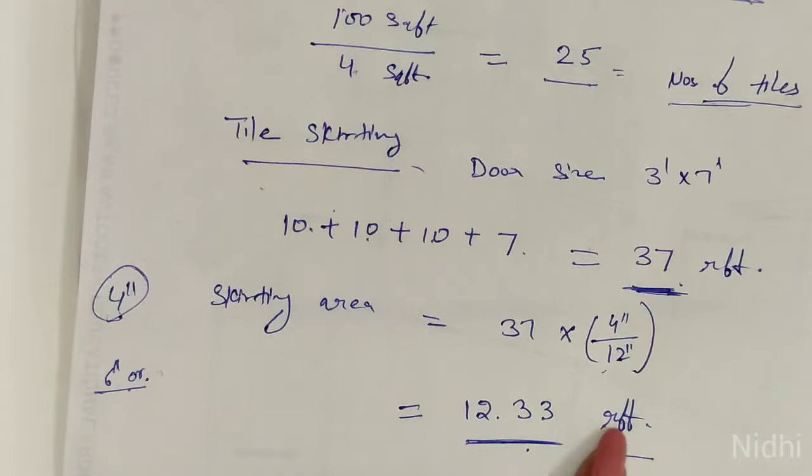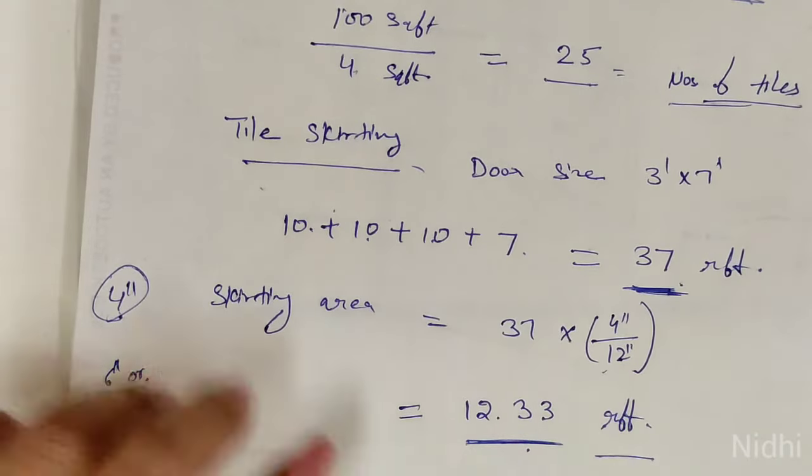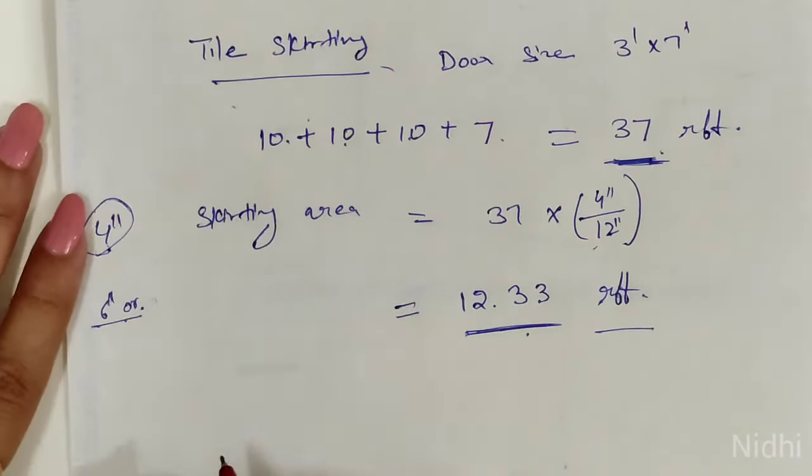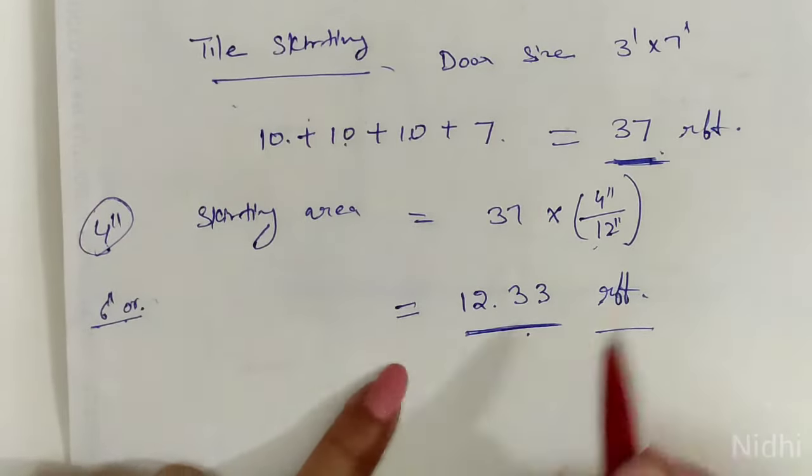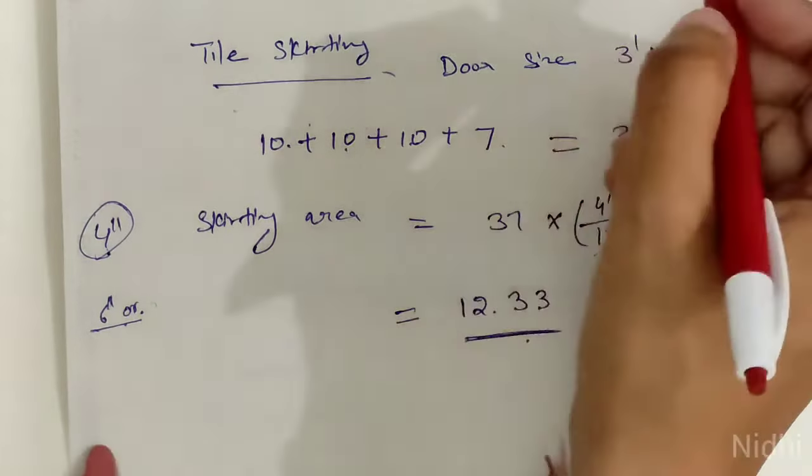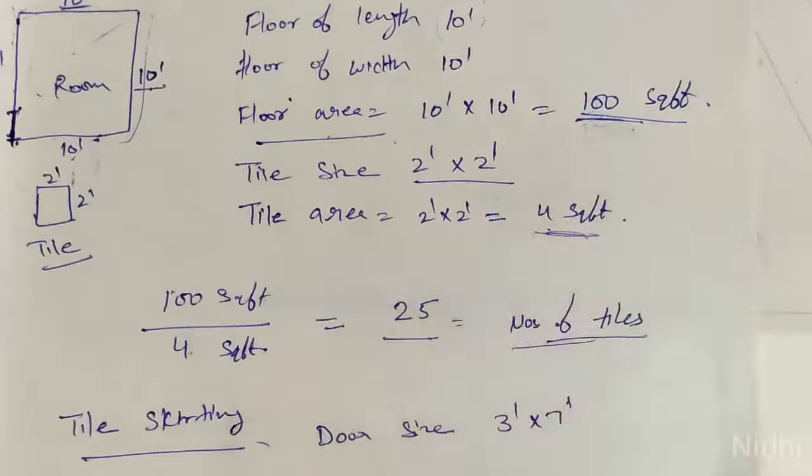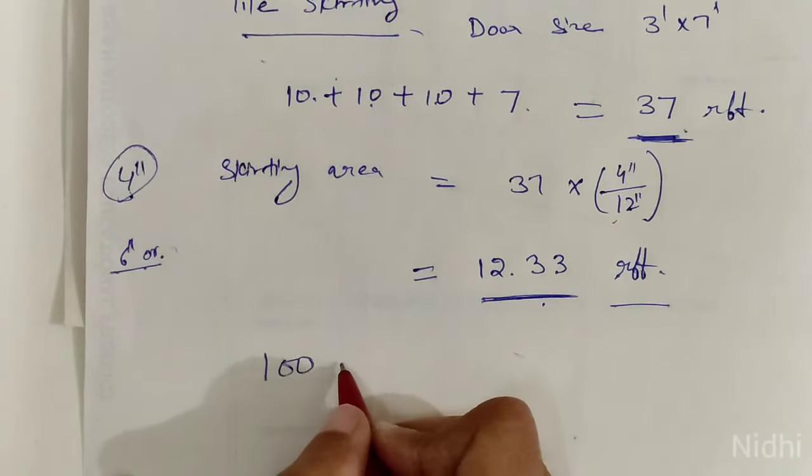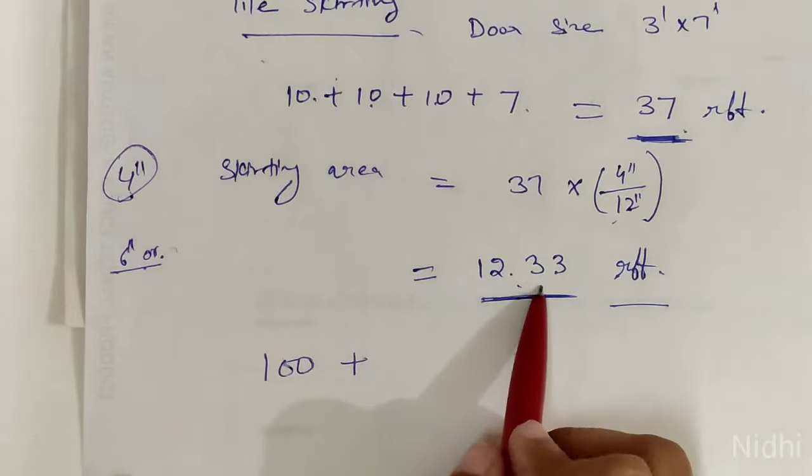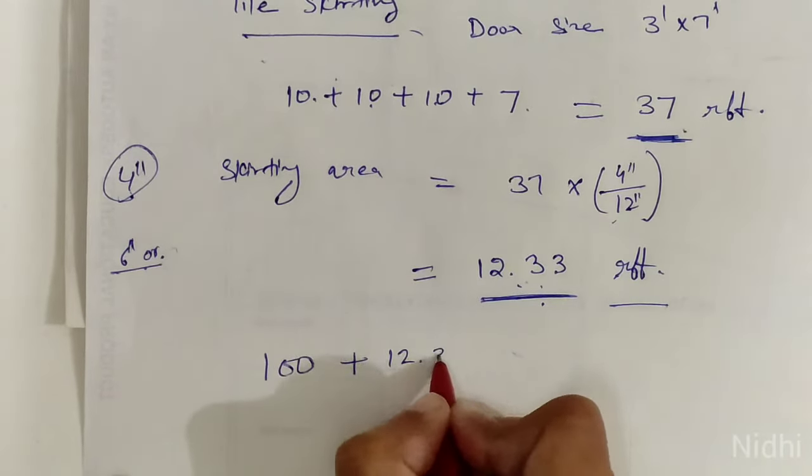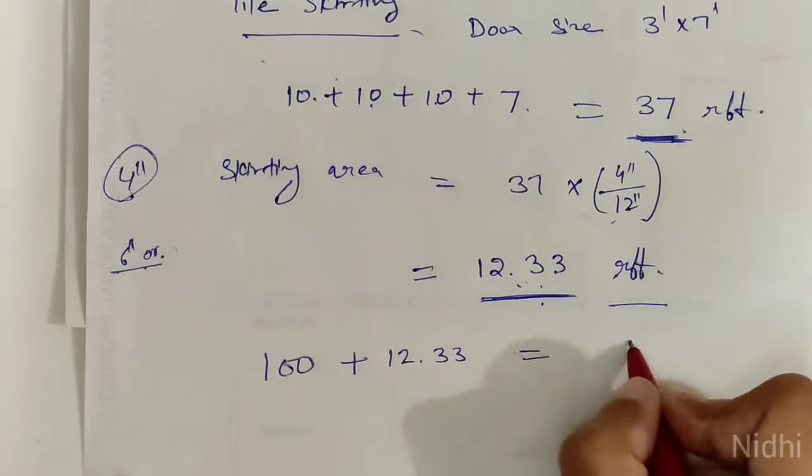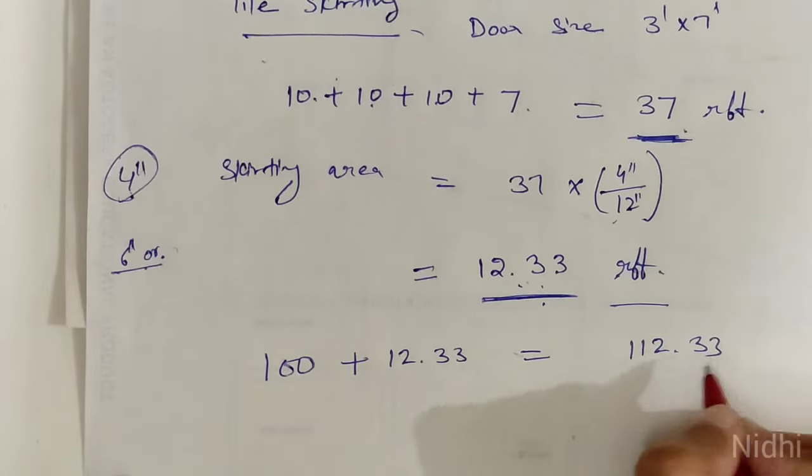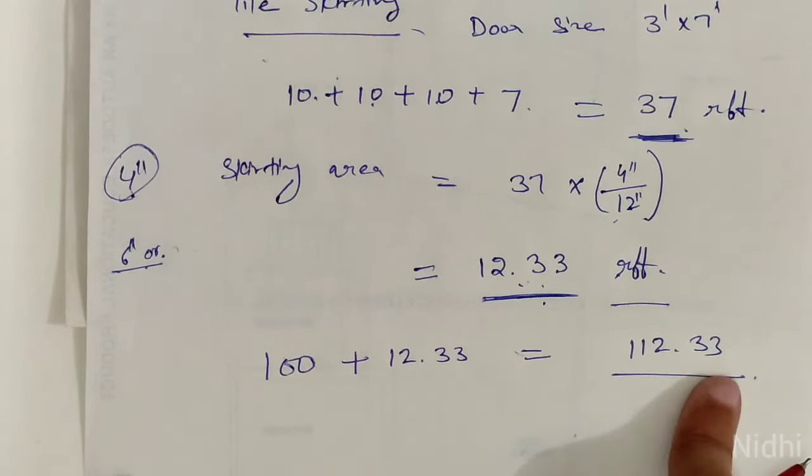So total area, how much will it be? Room total area: we have 100 square feet, plus skirting 12.33, equals 112.33 square feet.